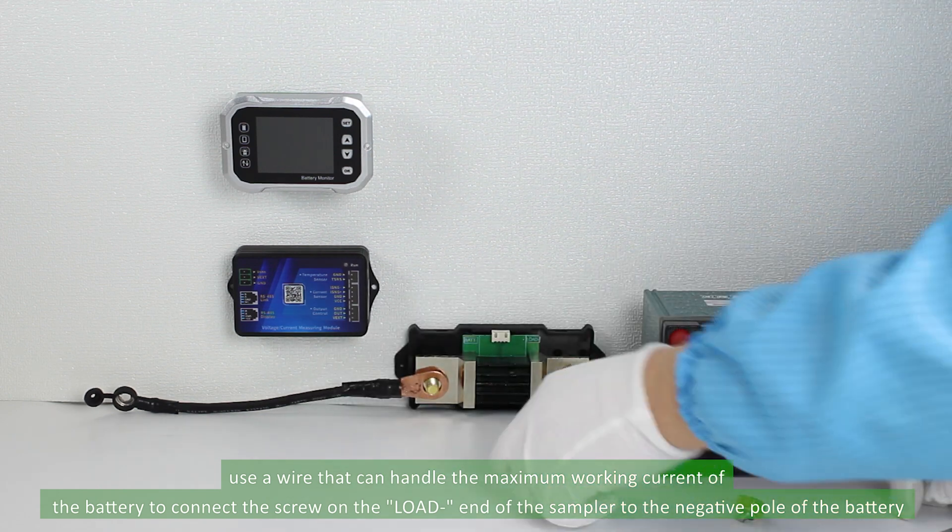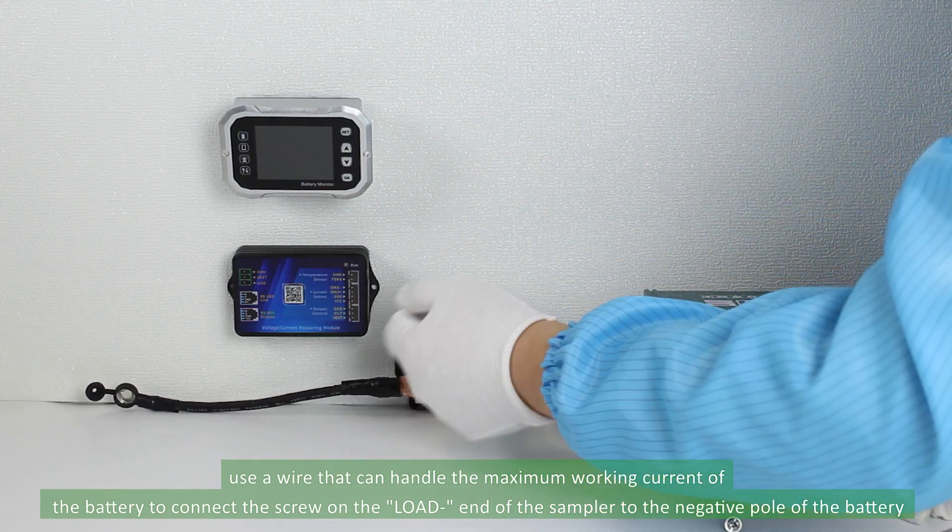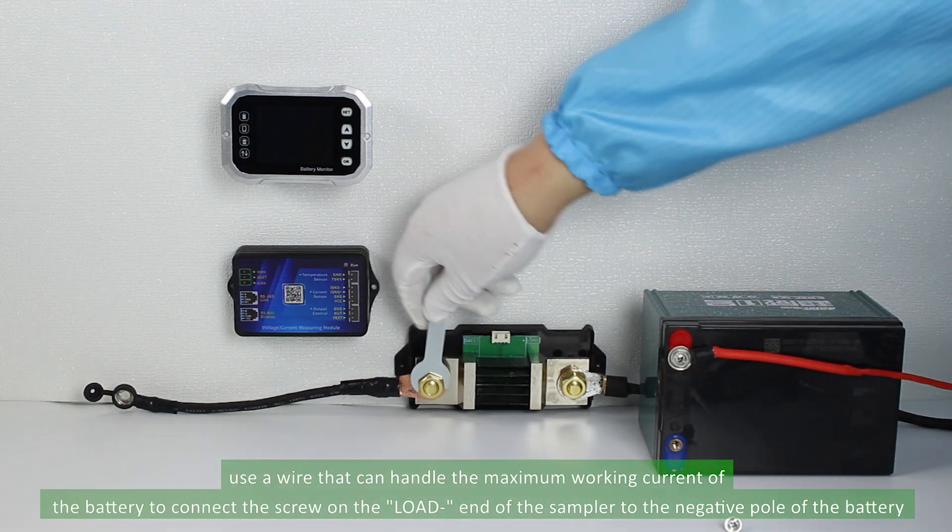Next, use a wire that can handle the maximum working current of the battery to connect the screw on the load end of the sampler to the negative pole of the battery.